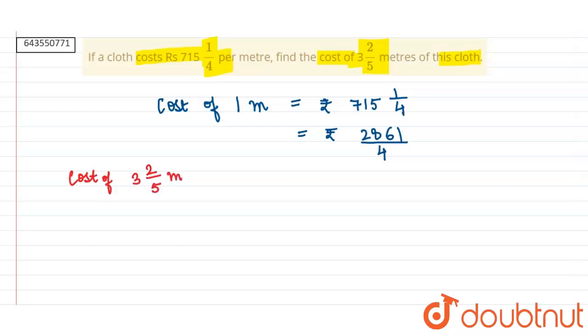Cost of 3 and 2 by 5 meters, that is 3 times 5 plus 2, equals 17 by 5 meters.